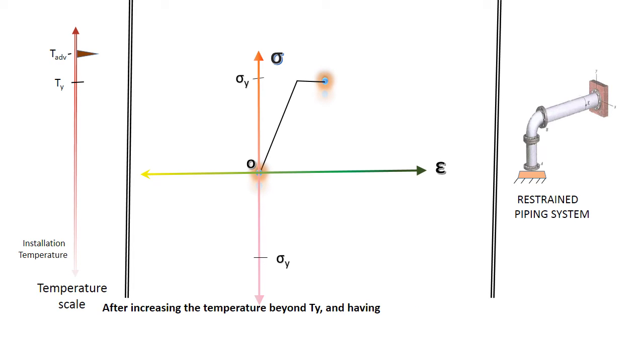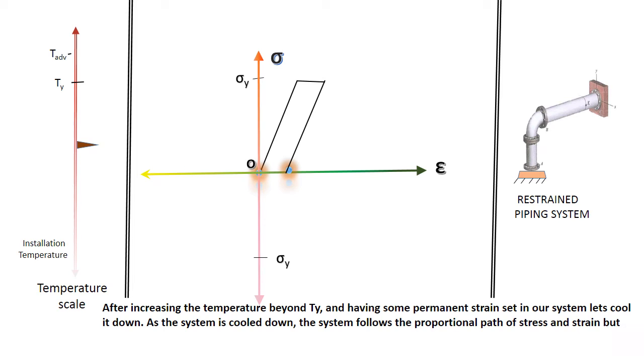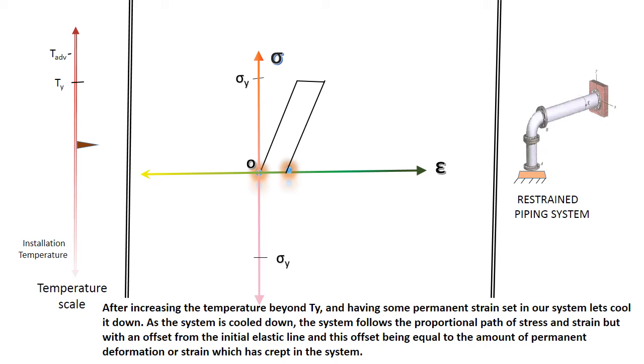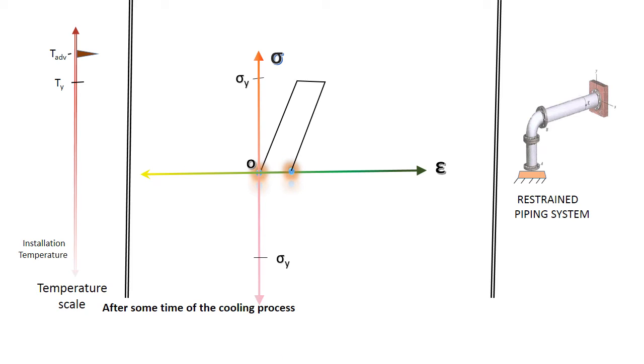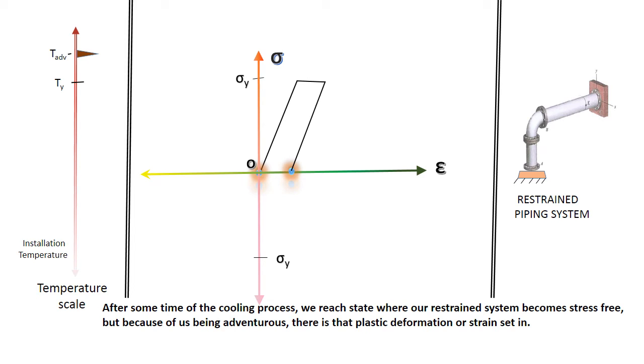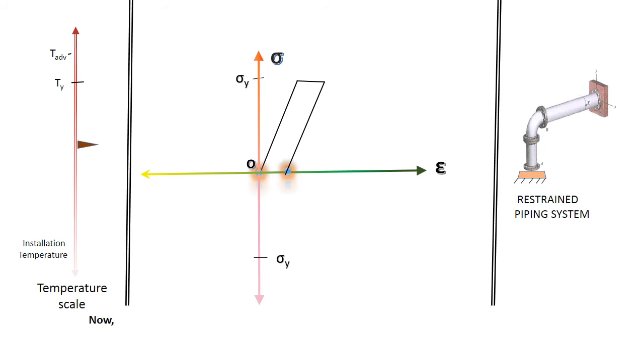After increasing the temperature beyond TY and having some permanent strain set in our system, let's cool it down. As the system is cooled down, the system follows the proportional path of stress and strain but with an offset from the initial elastic line, and this offset being equal to the amount of permanent deformation or strain which has crept into the system. After some time of the cooling process, we reach a state where our restrained system becomes stress-free but because of being adventurous there is a plastic deformation or strain set in.